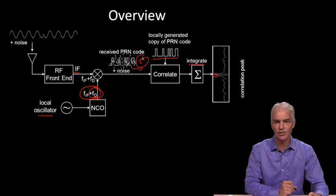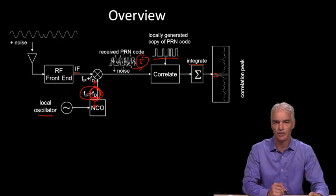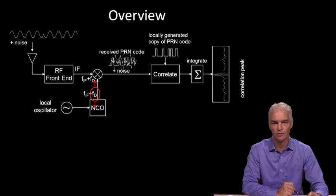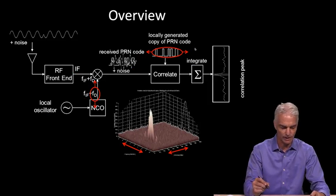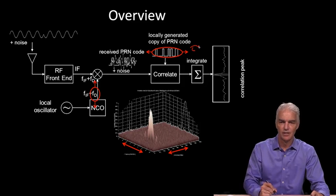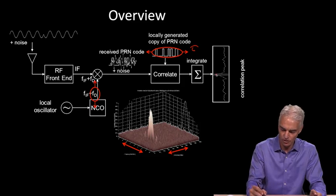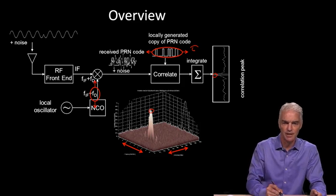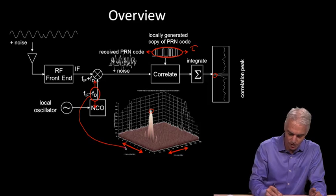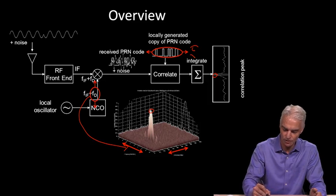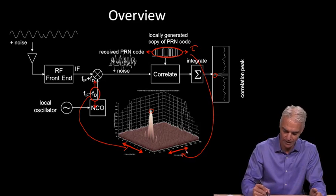As these things change, the result of our correlation and integration will change. So there are two things we're searching for: the Doppler and the code delay, or this tau value. That gives us a result in a two-dimensional space where the correlation peak occurs. This correlation peak changes over this two-dimensional space as the frequency changes and as the code delay changes — we search over both axes.